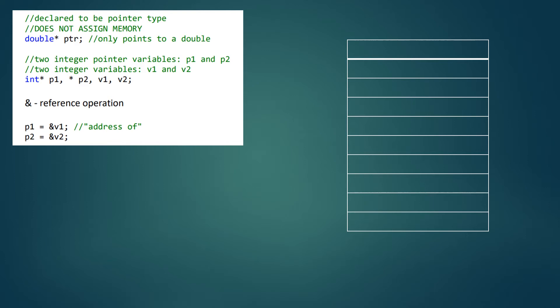Hello, welcome. In this video, we're going to talk about pointers. Pointers can be declared to be of any data type. You can have pointers that point to doubles, integers, or you can actually have pointers that point to objects of classes. But we're going to start simple with just pointers that point to doubles and integers.